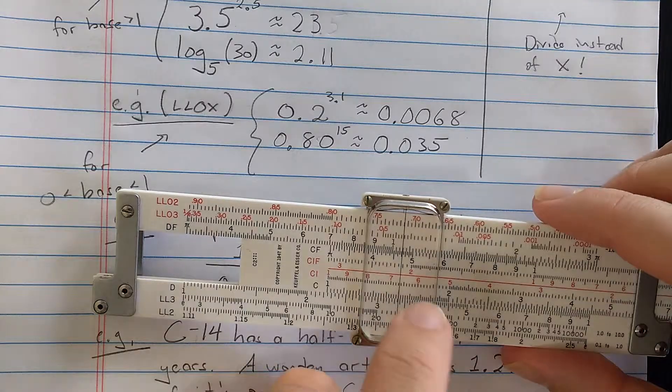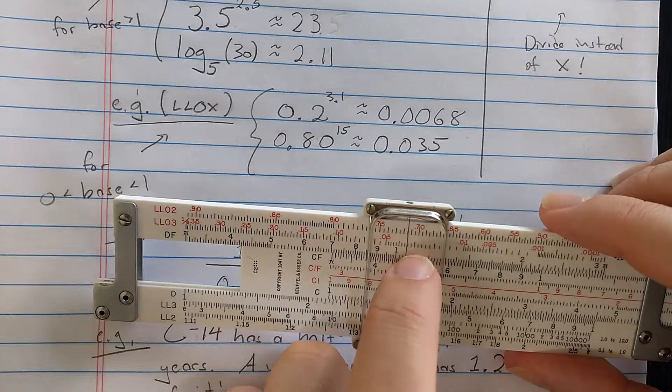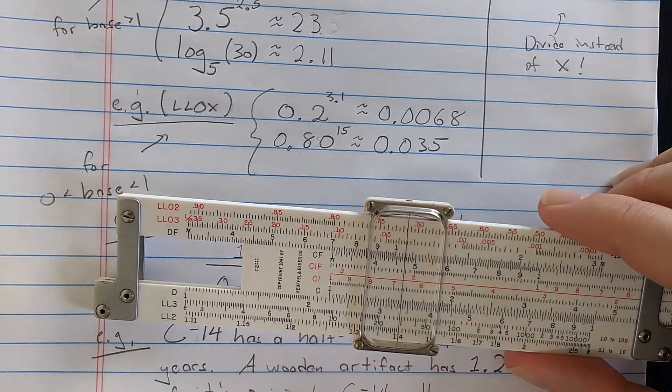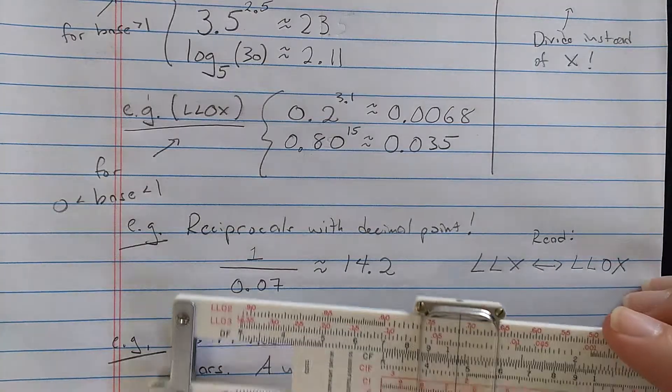Then I read the result on LL03. Let's see. I have 0.01 here. So 0.02, 0.03, right in the middle, 0.035. So you use LL0 for bases between 0 and 1.